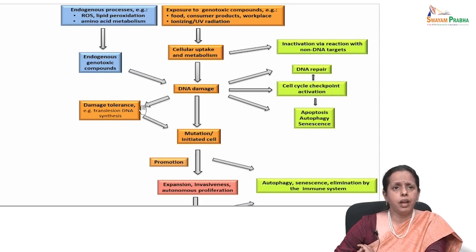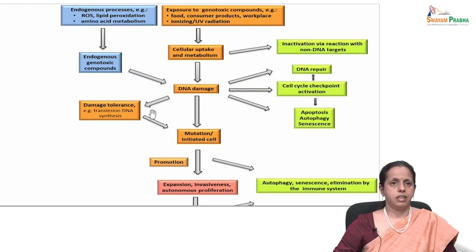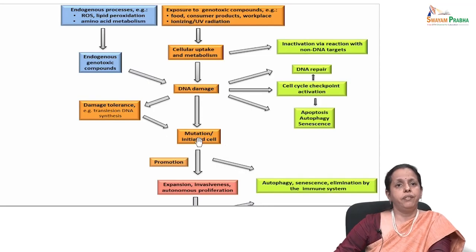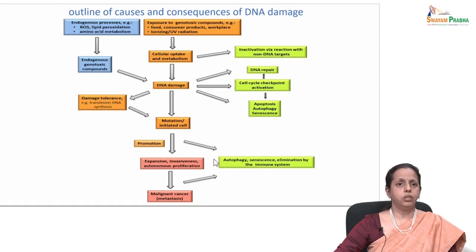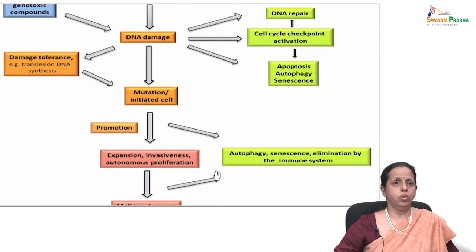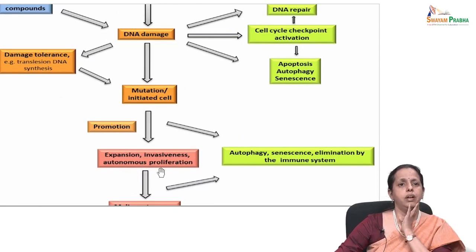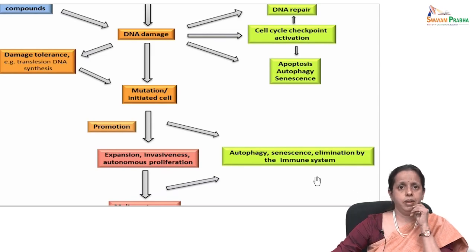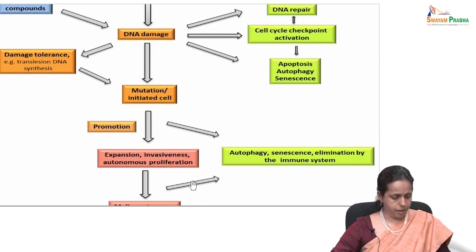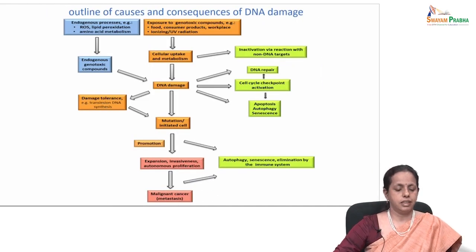If the DNA damage is tolerated — for example through transcription sensors — there will be inheritance of mutated cells. Here you have initiation and then promotion — mutated initiated cells expand, invade, and have autonomous proliferation mechanisms. By the action of repair mechanisms they could be eliminated by autophagy or senescence, or if not eliminated, they will lead to malignant cancer cells.